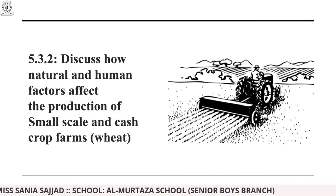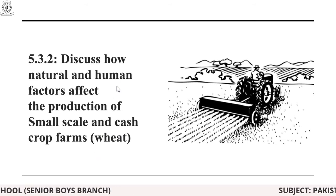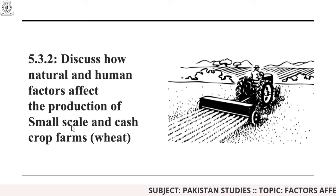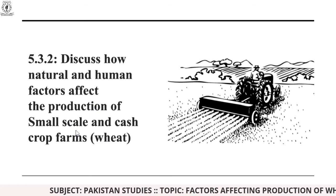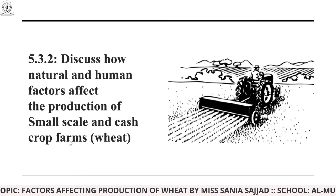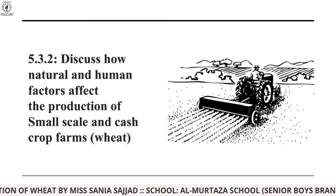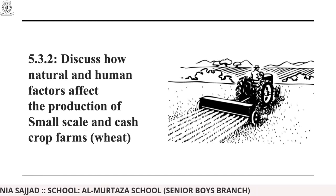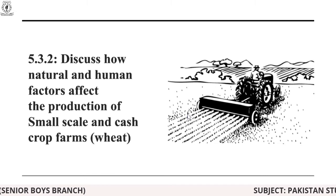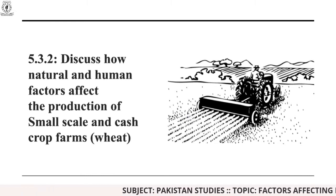In this SLO, we are going to discuss about wheat in particular, in which we are going to discuss about the human factors and natural factors which are affecting the production of small scale and cash crop farms. Small scale means subsistence farming for survival, and cash crop means that you are selling your product to other countries to generate revenue and profit. There is also a picture on the right side which shows a field of wheat.